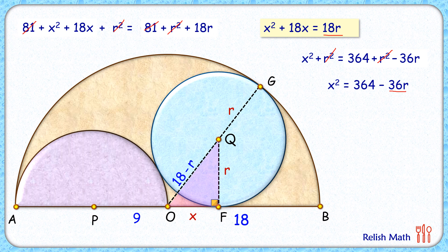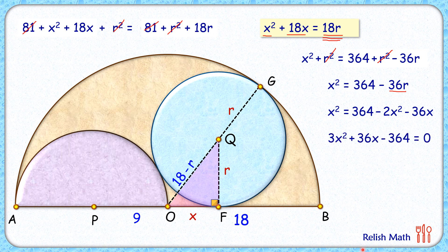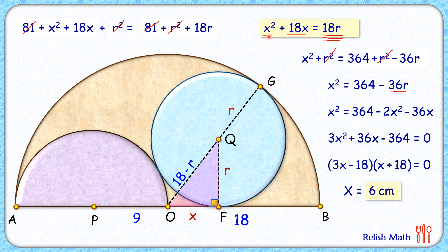Since 36R = 2 × 18R and we already found 18R = X² + 18X, substituting gives X² = 324 − 2(X² + 18X) − 2X², which simplifies to 3X² + 36X − 324 = 0. Factoring gives (3X − 18)(X + 18) = 0. Since X cannot be negative, 3X − 18 = 0, so X = 6 cm. Putting X = 6 back into 18R = X² + 18X gives the value of R as 8 cm, and that's our answer. I hope you enjoyed the solution — I'll see you in the next video!